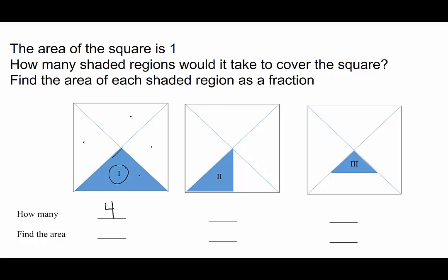Now if I say find the area of region number 1, the area of region number 1 is 1 fourth. We know the area of the square is 1, that makes the area of region 1, 1 fourth.